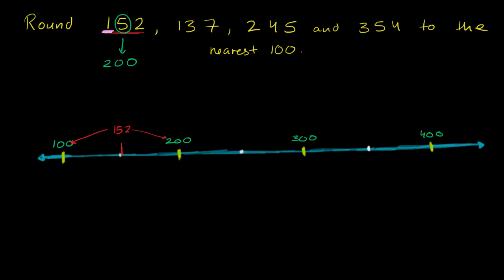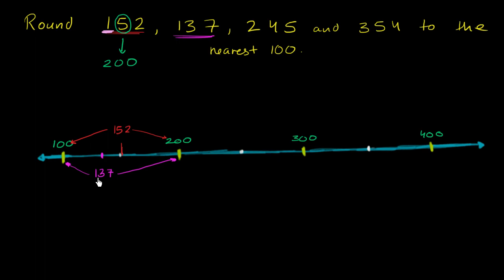Now let's think about 137. I encourage you to pause the video and try to round each of these other numbers yourself. 137 sits right over here on the number line. We can round down to 100 or round up to 200. Looking at the tens place: if it's five or larger we round up; if it's less than five we round down. Here the tens digit is 3, so we round down to 100.